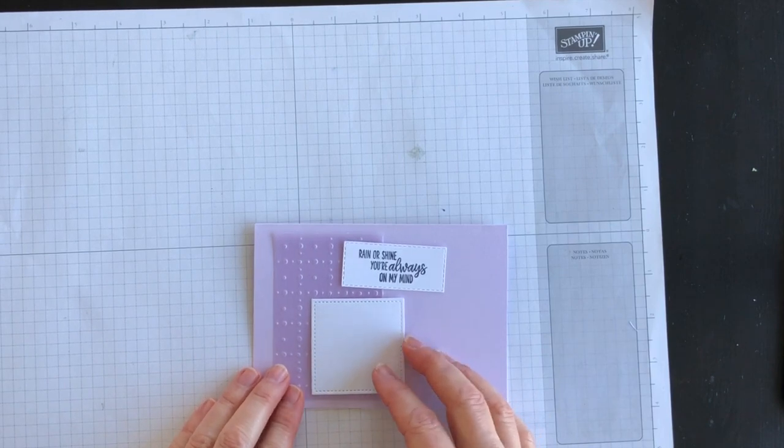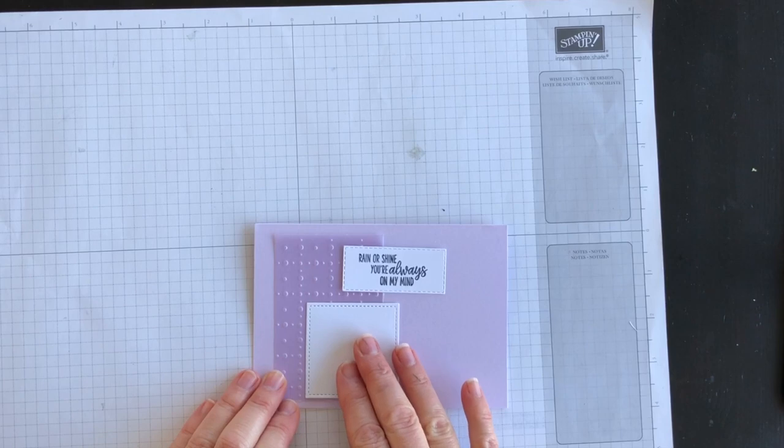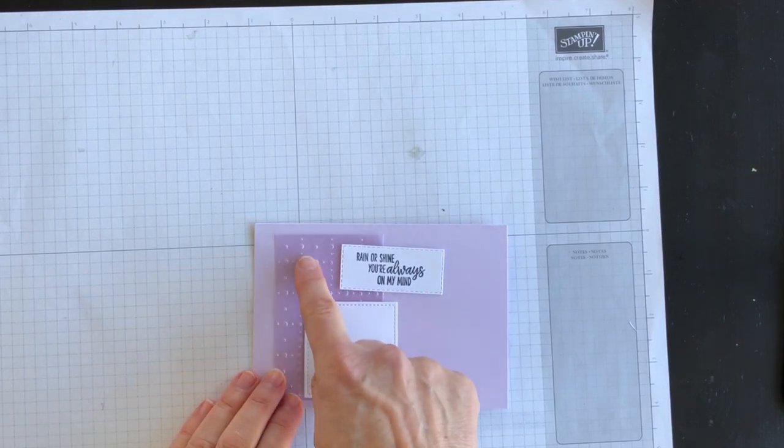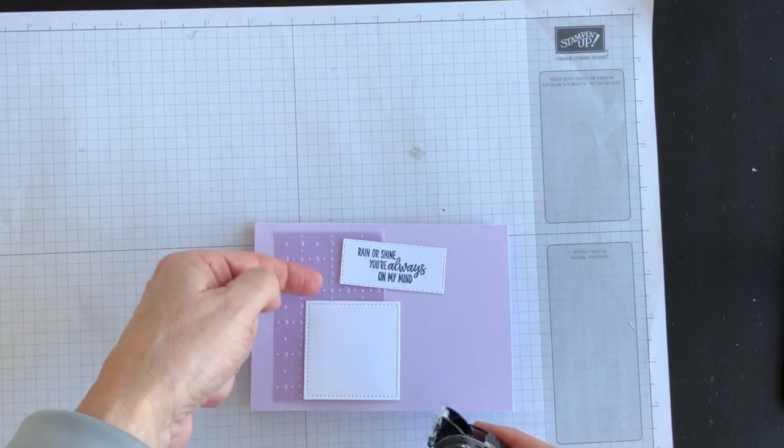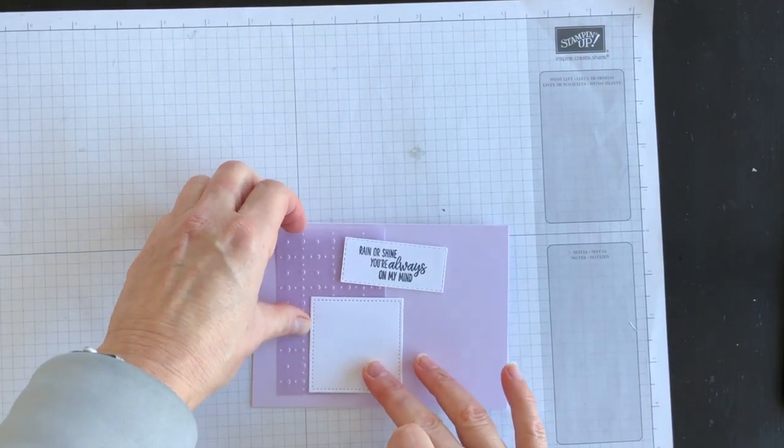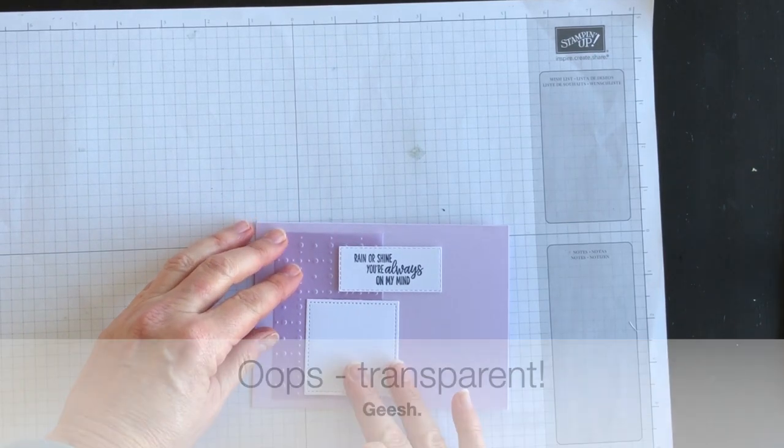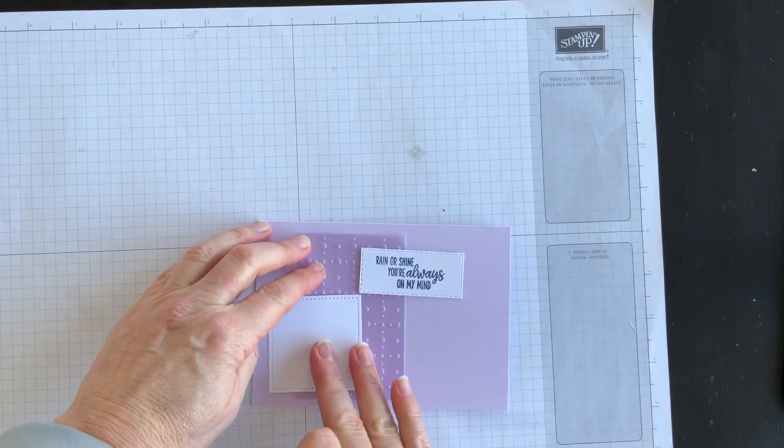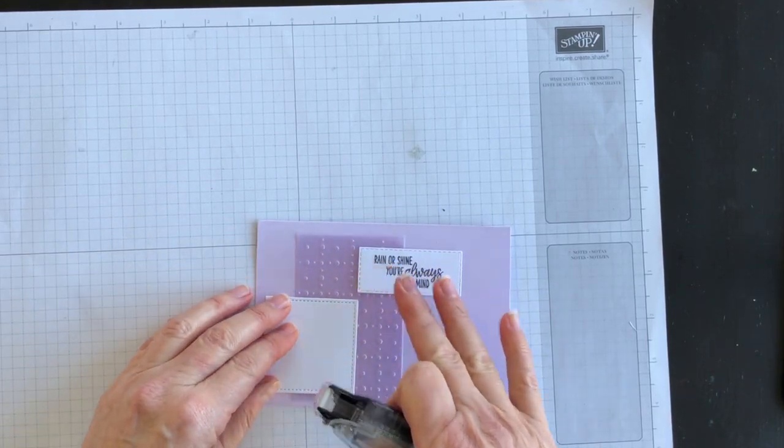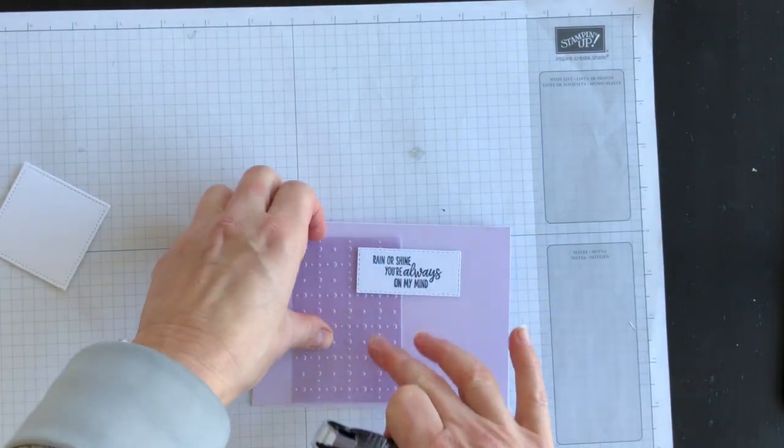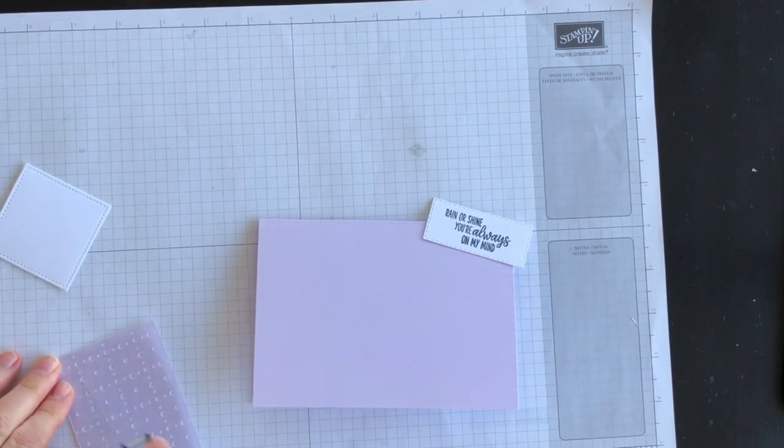Now, when you attach Vellum, you don't want to use adhesive where you're going to be able to see it, because Vellum is so translucent. If I used my snail, you'd be able to see it underneath there. So what you want to do is you want to just kind of figure out where all your layers are going to be. And then I know where to put my adhesive for my Vellum. So I'm going to put a strip there, and then I'm going to put a strip near the top.